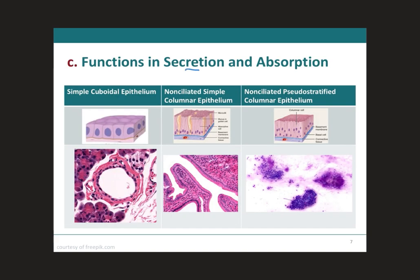Next, we have the epithelia that function for secretion and absorption. The first type is the simple cuboidal epithelium, and the next is the non-ciliated pseudostratified columnar epithelium. What they have in common is that all of them are only going to have one cell layer. For you to have secretion and absorption, it does not make sense to have several cell layers, because absorption would take a long time going through several layers. So for this type of function you can only have one cell layer.